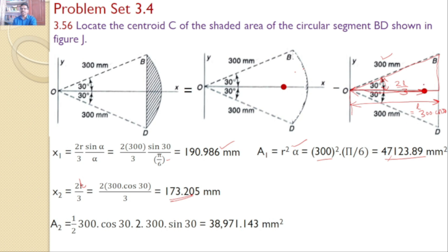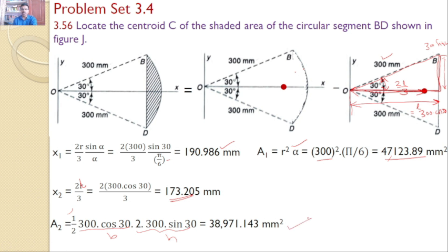The total area of the triangle is given by half base times height. The base is 300 cos 30° and the height is 2 × 300 sin 30°. This gives the area A2 = 38,971.143 mm².